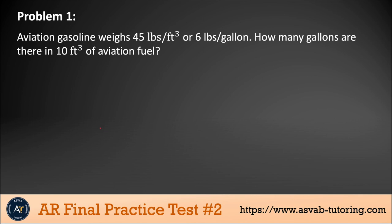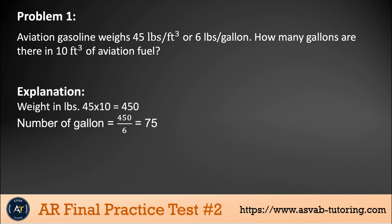Read it first and make sure that you understand. If you don't understand the first time, read it again. If you know your basic math operations, these are very simple. You cannot convert directly from cubic feet to gallons, so you have to convert cubic feet into pounds and then pounds to gallons. Multiply 45 by 10, that gives you 450 pounds. Then divide 450 by 6, because 1 gallon equals 6 pounds. That gives you 75. So that is the correct answer.